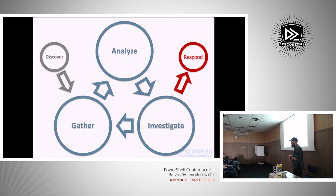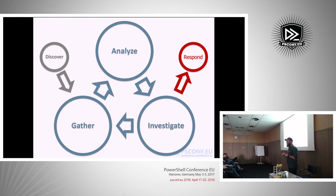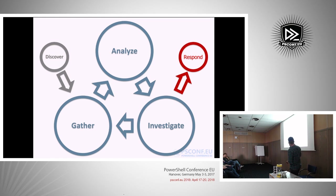I work for a company called Specter Ops. We've developed a methodology for threat hunting. First is discovery — as a consultant I often go into an environment and ask how many computers they have, they say 2,000, but Active Directory shows 16,000 computer objects. Discovery tries to answer that ground-truth problem. Then we cycle through gathering information, analyzing that information, and investigating any anomalies or indicators found during analysis — until we find something malicious, then we go into a response phase.